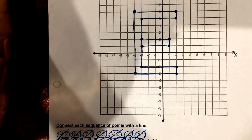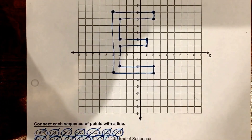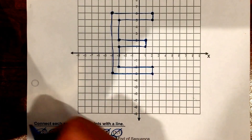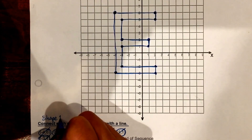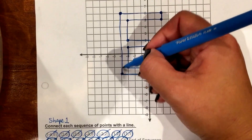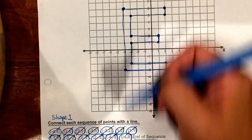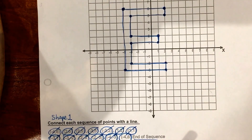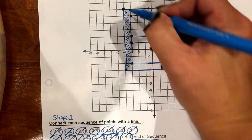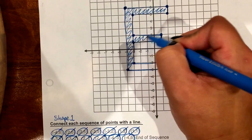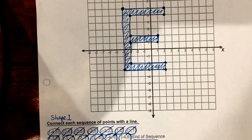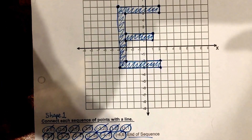As you can see, I created what looks like an E. It says 'end of sequence,' which just means you ended your shape. Sometimes you might see 'shape 1' or 'shape 2,' which means connect your last point back to the first point to finish the shape. If you want, you can lightly color it in — and there you have it: graphing and connecting ordered pairs.